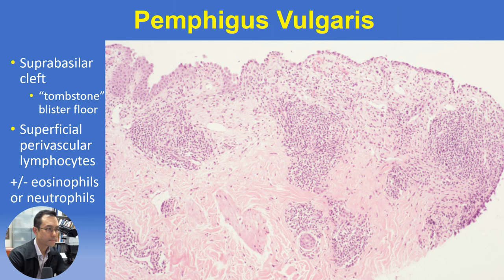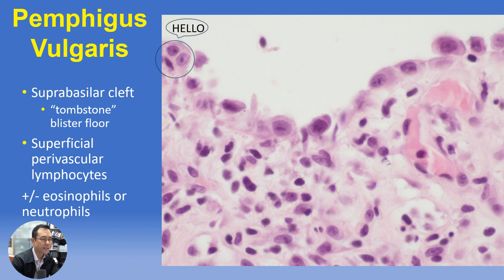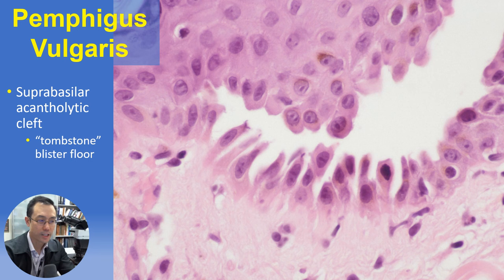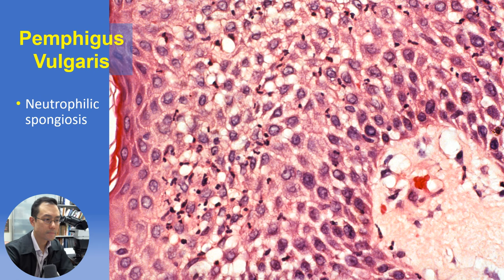The associated inflammatory infiltrate is usually superficial, mostly lymphocytes but also typically containing eosinophils, neutrophils, or frequently both. At higher magnification, the blister floor in pemphigus vulgaris contains more or less a monolayer of basilar keratinocytes, with the rounded and discohesive profiles revealing acantholysis as the mechanism. Primary histopathologic features are often best preserved at the peripheral edge of the blister, with the classic tombstone appearance of the blister floor in the suprabasilar acantholytic cleft.